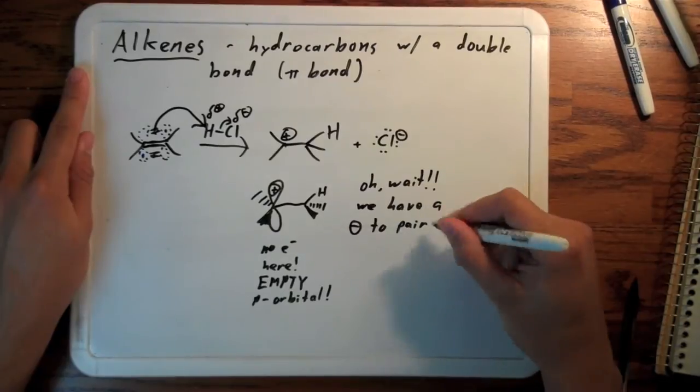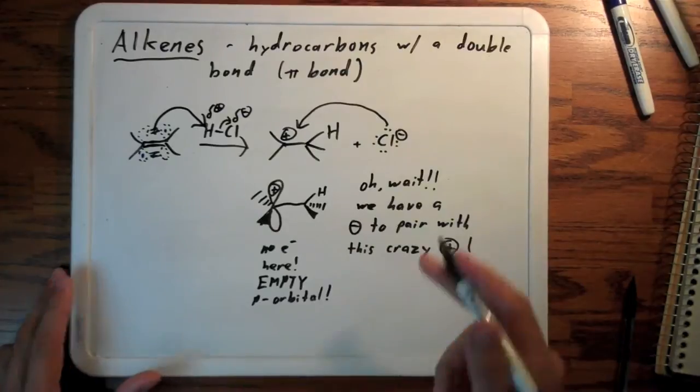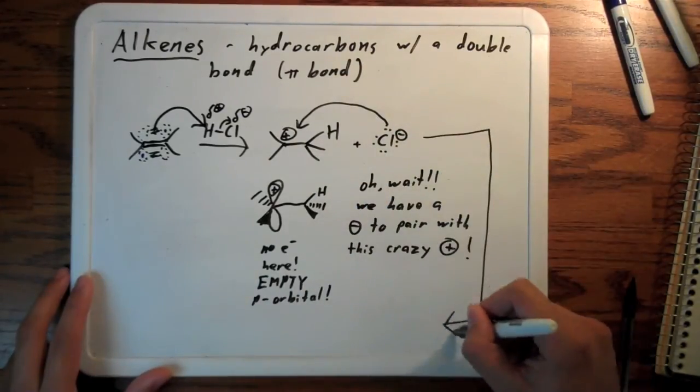Oh wait! We have a negative to pair with this crazy carbocation! The chloride anion transfers two of its electrons to create a bond with this carbocation, giving us this product.